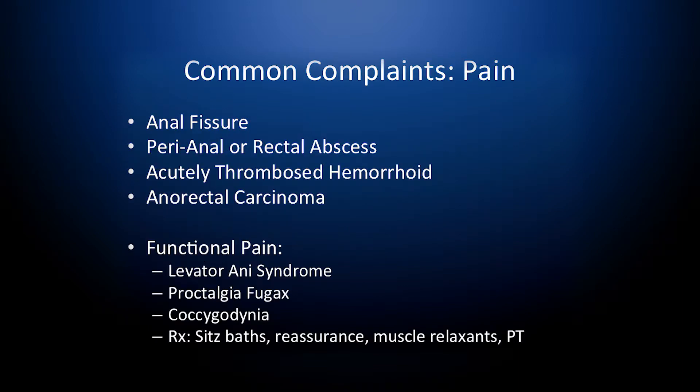One of the most common complaints is anal rectal pain. The most common reason for anal rectal pain is an anal fissure. It could however be a perianal abscess or a rectal abscess, an acutely thrombosed hemorrhoid, or anorectal carcinoma. This highlights the importance of a rectal exam prior to doing any further testing. Anorectal cancer as well as an acutely thrombosed hemorrhoid are visibly obvious. Sometimes perianal and rectal abscesses need to be palpated to elicit pain or tenderness. Other causes of anal rectal pain include levator ani syndrome, proctalgia fugax, and coccygodynia.